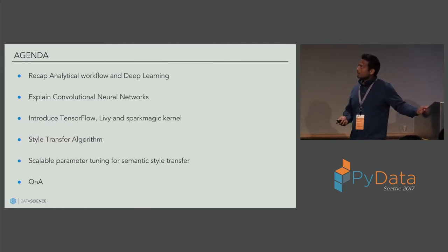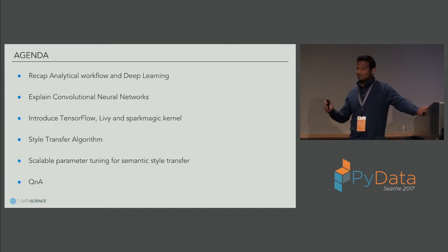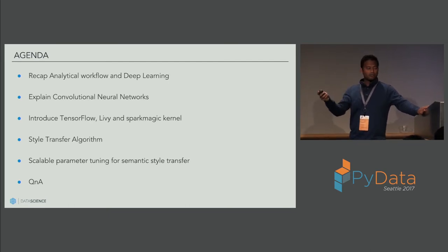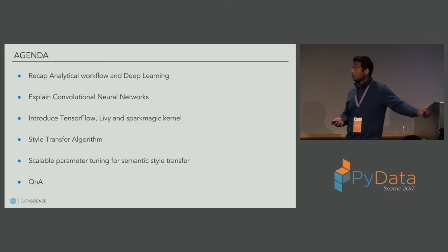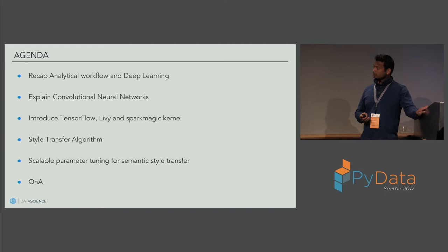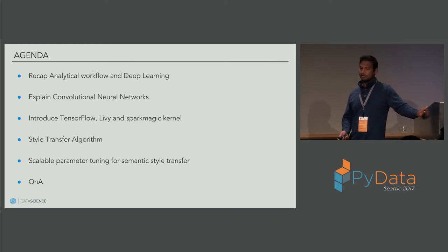Today's agenda will be to make sure everybody's on the same page. We're going to do a recap on the analytical workflow. I'll make sure everybody's on the same page with respect to convolutional neural networks, because I'm guessing not everybody does deep learning or image segmentation or classification on a day-to-day basis. We'll introduce TensorFlow, Livy and SparkMagic — some recent projects that have come along. Then briefly explain the style transfer algorithm, and a small experiment I did to scale the parameter tuning for the style transfer algorithm using Spark and TensorFlow. Then we'll get to Q&A.